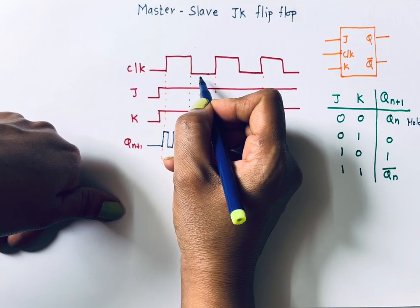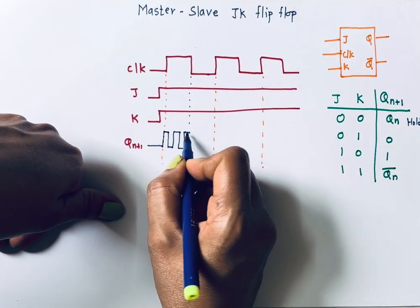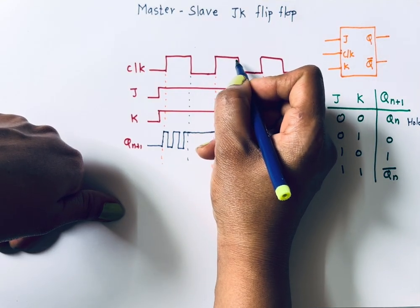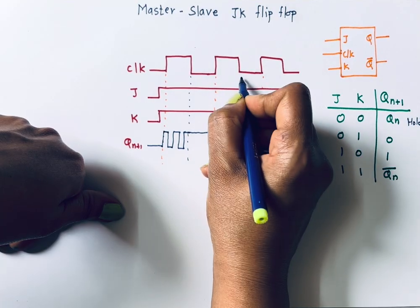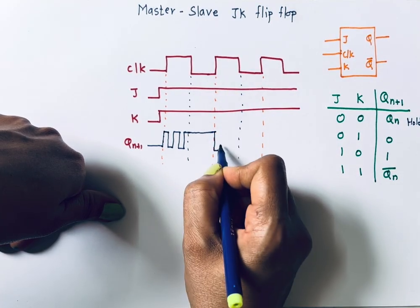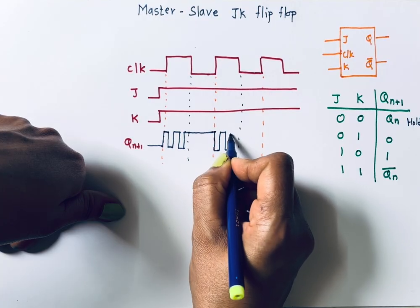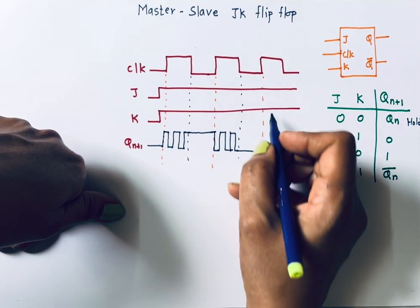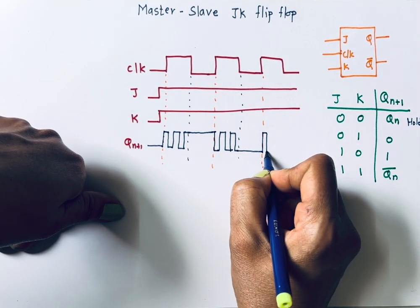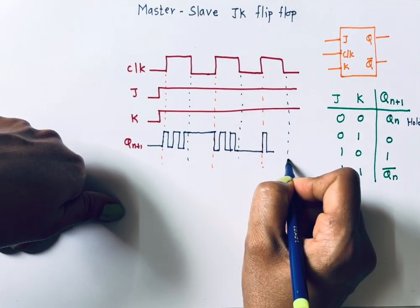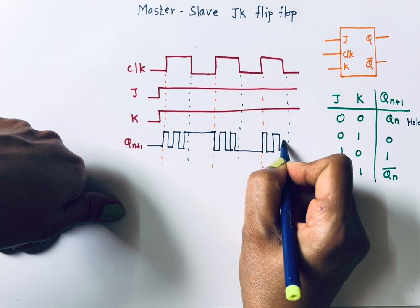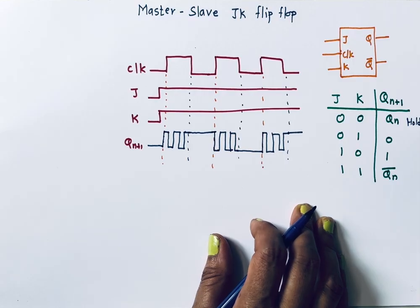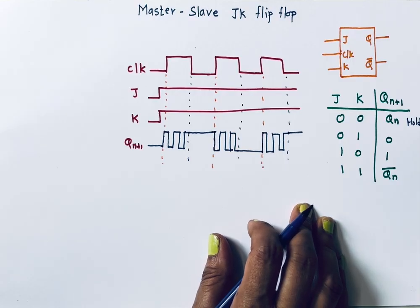During the negative level, when no clock is present, it will hold the previous output. So if the previous output is one, it will hold that. When the next positive level comes again it will start to toggle — output becomes one, zero, one, zero. During the negative level it holds the previous output, and when the positive level comes again it toggles. This is how the race around condition occurs in the normal JK flip-flop.